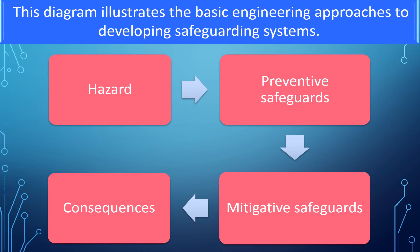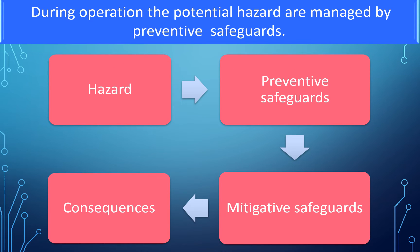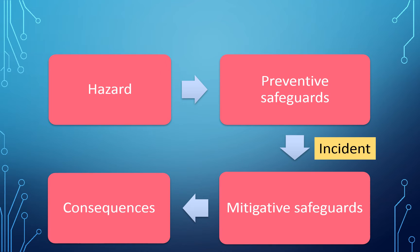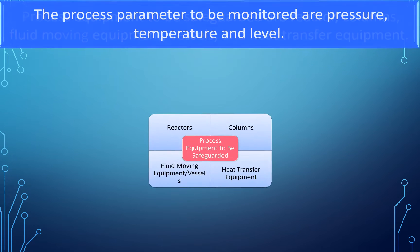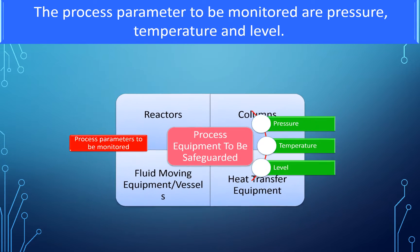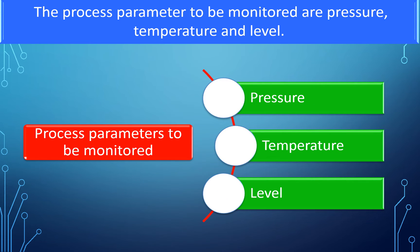This diagram illustrates the basic engineering approaches to developing safeguarding systems. During operation, potential hazards are managed by preventive safeguards. When these fail, it leads to an incident, which is managed by passive safeguards such as mitigation methods to reduce the consequence of the incident. Process equipment to be safeguarded includes reactors, columns, fluid moving equipment, vessels, and heat transfer equipment. The process parameters to be monitored are pressure, temperature, and level.